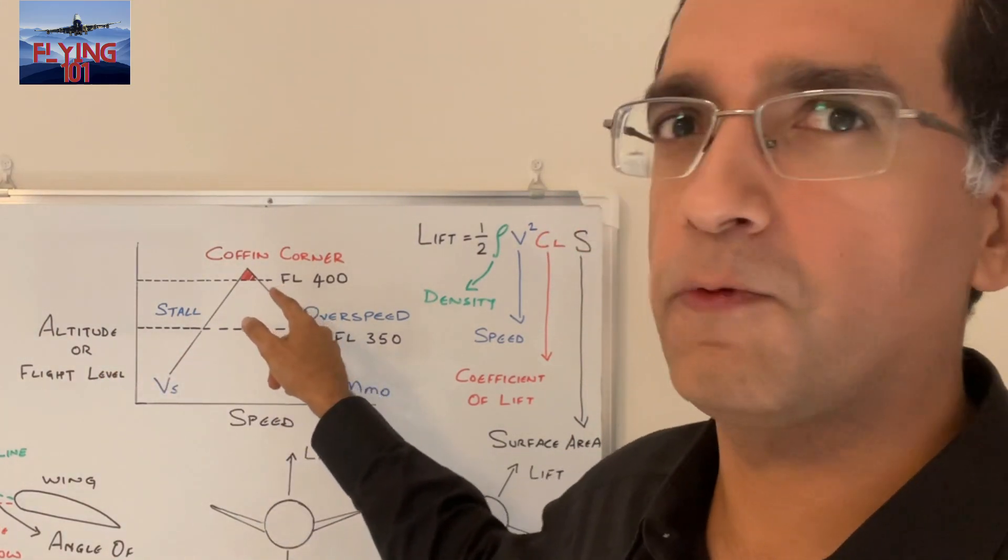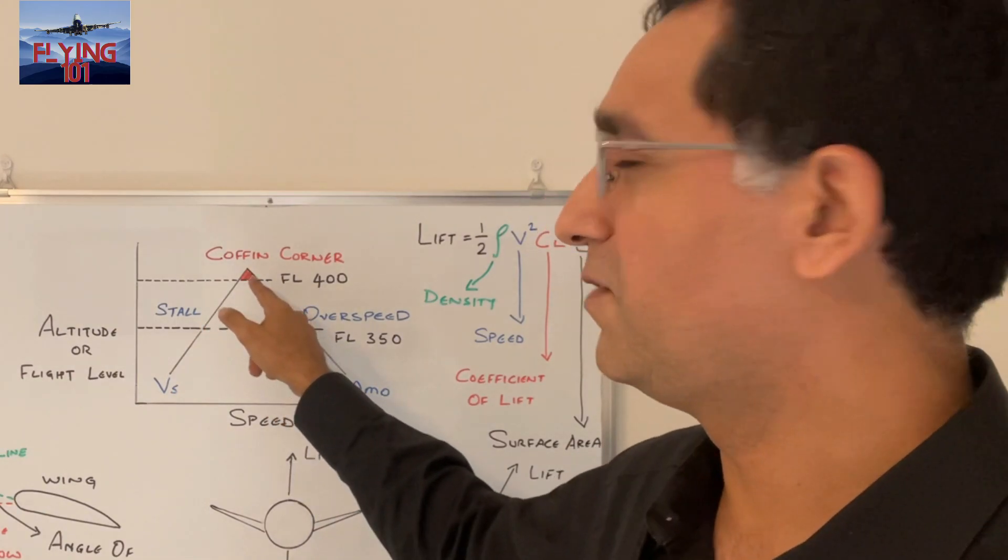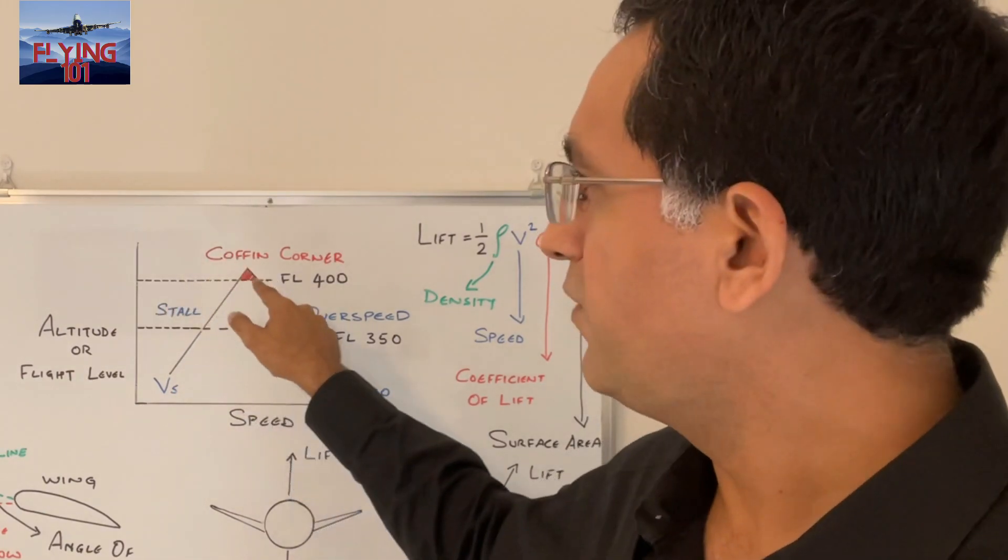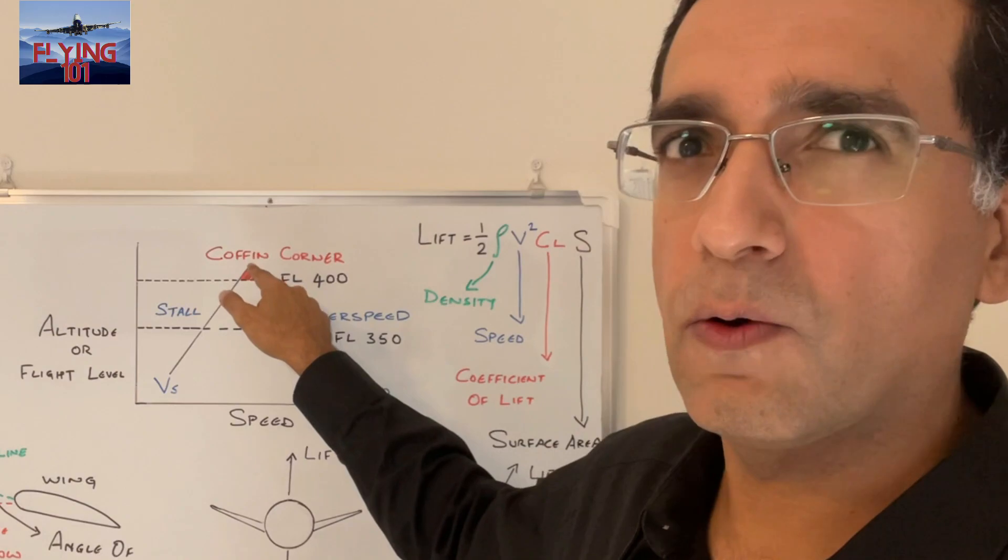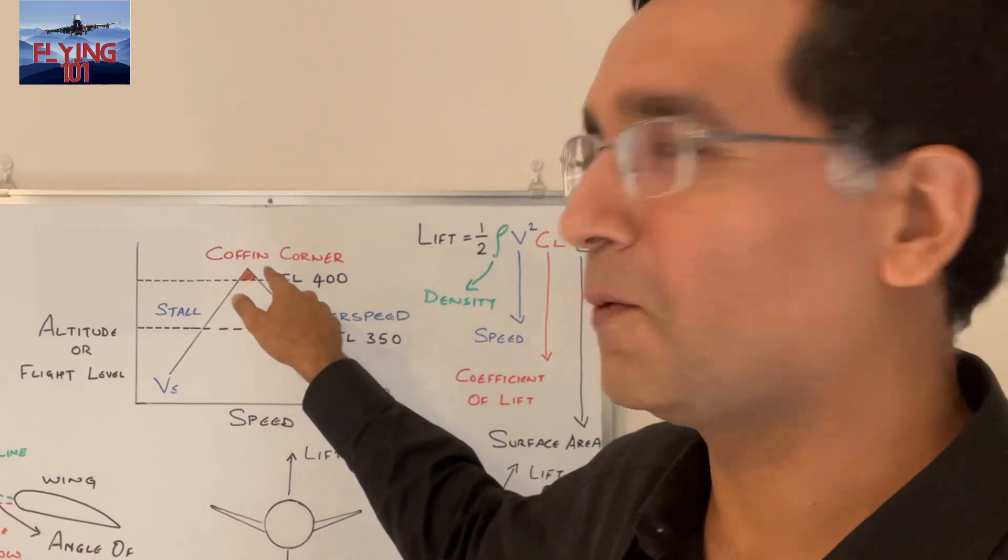Whereas at flight level 400 or 40,000 feet, the margin is indeed very slim. And the point where these two speeds intersect or are concurrent is exactly what the coffin corner is.